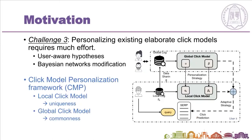Third, personalizing existing elaborate click models requires much effort. Some previous works have made an attempt to add user-aware hypotheses into basic click models and modify the latent networks. To personalize a wide range of existing click models without extra modification of their behavior hypotheses, we propose a click model personalization framework. The CMP framework consists of local and global click models. The local click models are constructed to capture the uniqueness of each user's behavior patterns and relevance judgment preferences, and the global click model is constructed to capture the commonness of the entire user group.